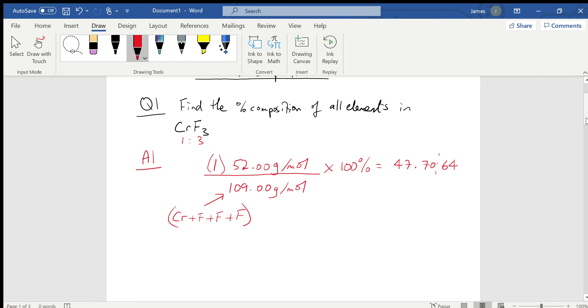So I propagate non-significant digits five and six. I look at the first digit, and because it's greater than five, I can add one to that previous digit. So my final answer is 47.71 percent chromium.